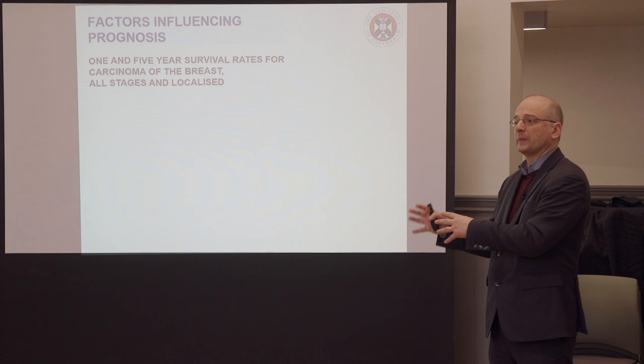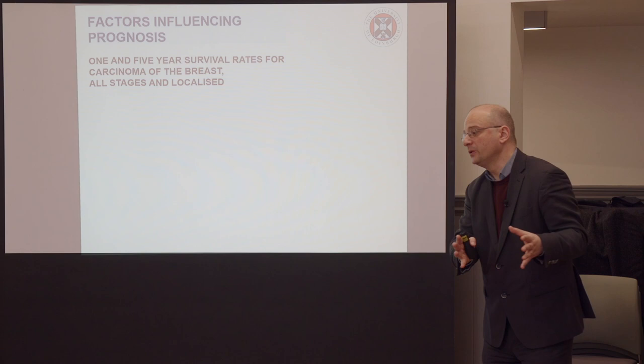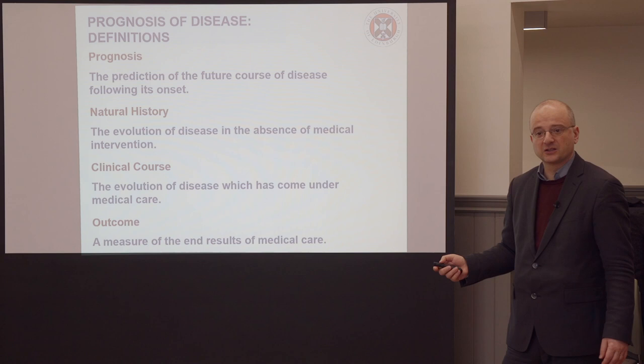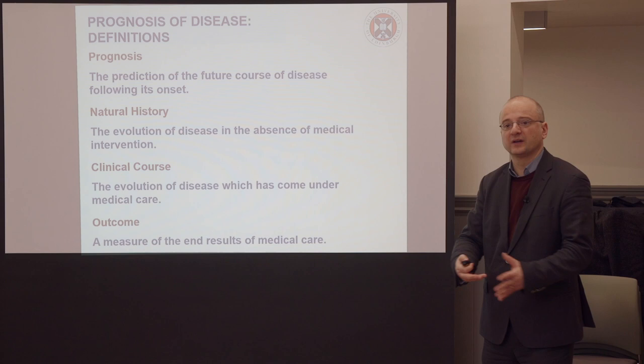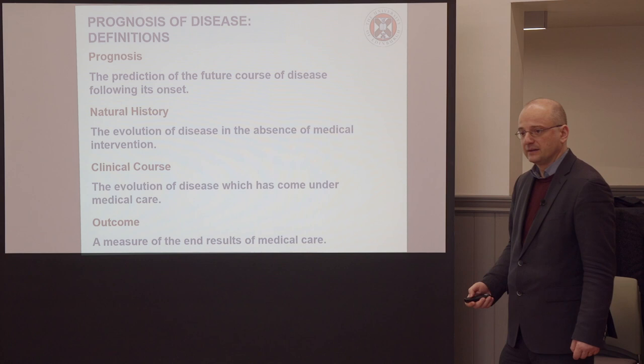Now we've moved away from the community where we were discussing concepts of risks, interventions, and burden. Now we are only talking about the people who suffer from disease and have come under the attention of care. If they don't come under the attention of care, then we're talking about natural history of disease — just seeing what happens without any care in the community. But if they do come under care, we talk about clinical course, prognosis, and outcomes.